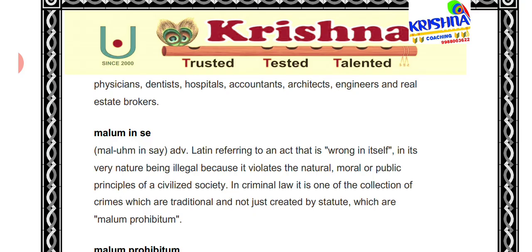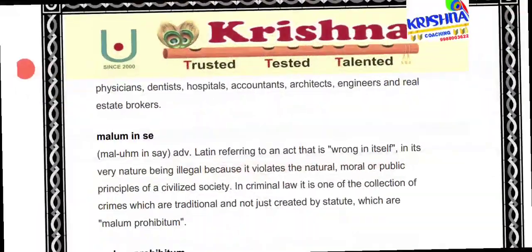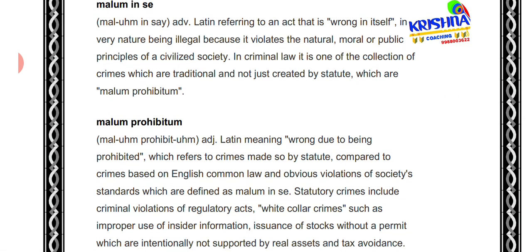Next is 'malum in se' — it is a Latin term which means 'wrong in itself.' It refers to acts that are illegal by their very nature, violating moral principles, public principles, and natural principles of civilized societies. Next is 'malum prohibitum' — also a Latin phrase meaning 'wrong due to being prohibited.'